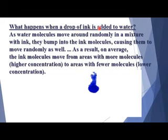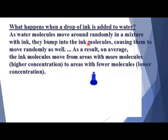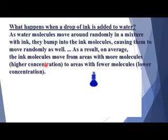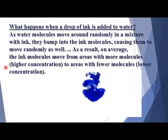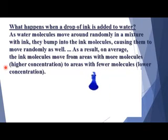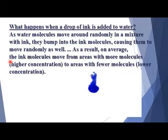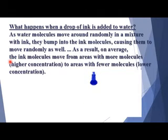When a drop of ink is added to water, the water molecules move around randomly and bump into ink molecules, causing them to move randomly as well. As a result, on average the ink molecules move from the area with more molecules — higher concentration — to the area with fewer molecules — lower concentration. Both the water and ink molecules are moving, and as a result there is a mixing of water and ink, changing the color of the water. This shows the process of diffusion.